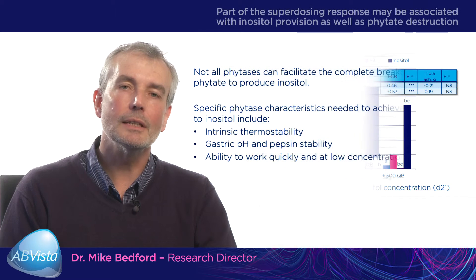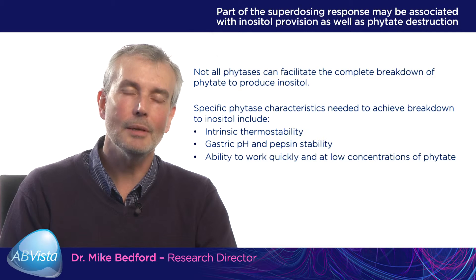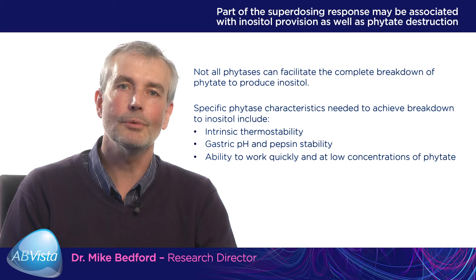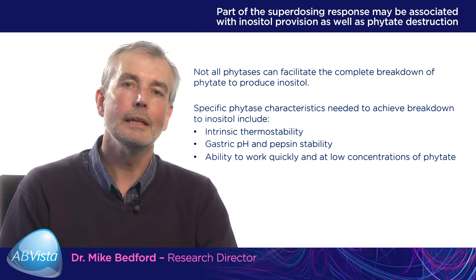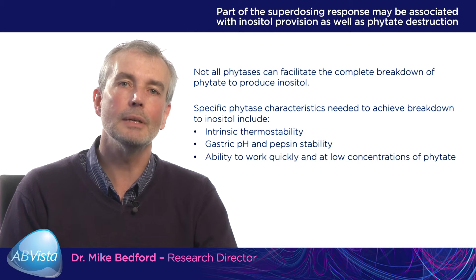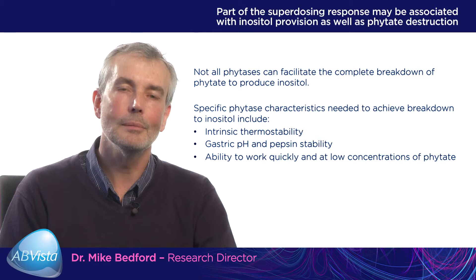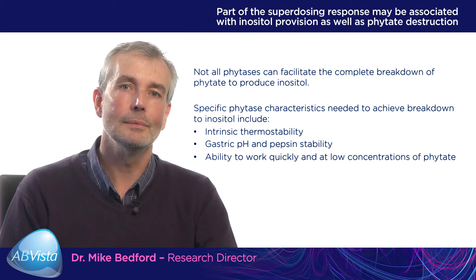So superdosing is not simply breaking down IP6, it's not simply breaking down IP4 and IP3 — all of which are anti-nutrients. It's also producing inositol, which is a nutrient that appears to be required by the broiler chicken and by the piglet in modern-day diets.